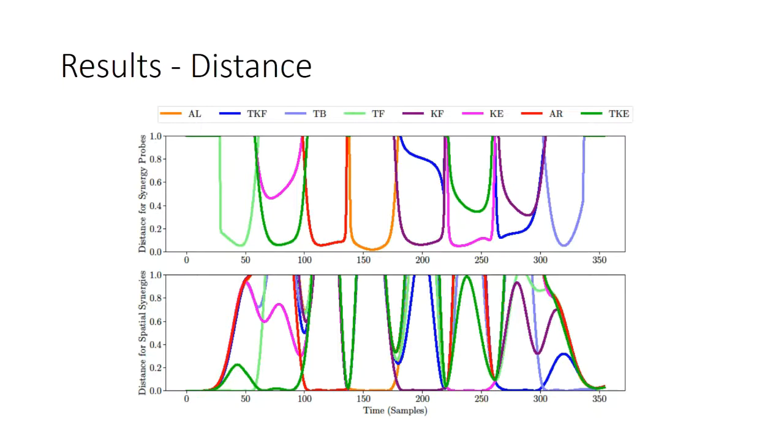This is actually something good because we can use this error as a performance measure to see how good was the movement. Another difference between the algorithms is that during the transition between two patterns, in the case of spatial synergies, almost all sets of synergies have a distance close to zero. But in the case of the synergy probes, we can see a transition between the previous and the next pattern.